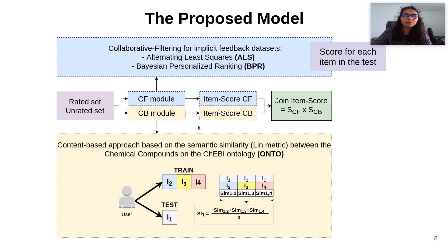The final score of the hybrid model for each item is the multiplication of the score obtained from ALS or BPR and the score obtained by the ontology algorithm.